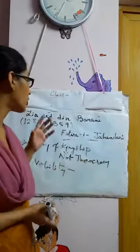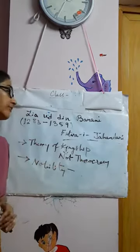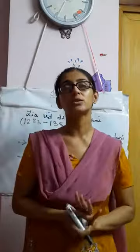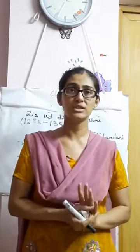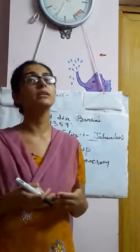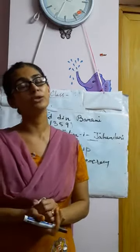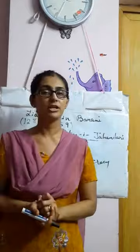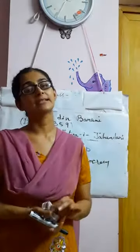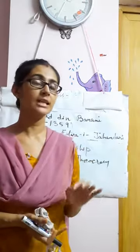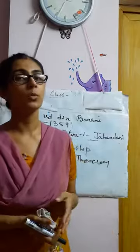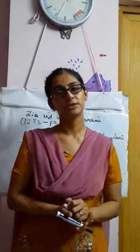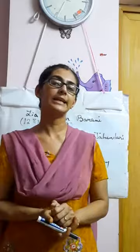Overall, what we get from Fatwa-i-Jahandari is that the Delhi Sultanate was not a theocratic state — it was a secular state where both Hindus and Muslims co-existed and were given positions under the rule of the sultan and nobles. Another important point Ziauddin Barani clearly states is that the king or sultan should be very careful while selecting nobles. We will stop here for today and continue with the next topic next time. Thank you.